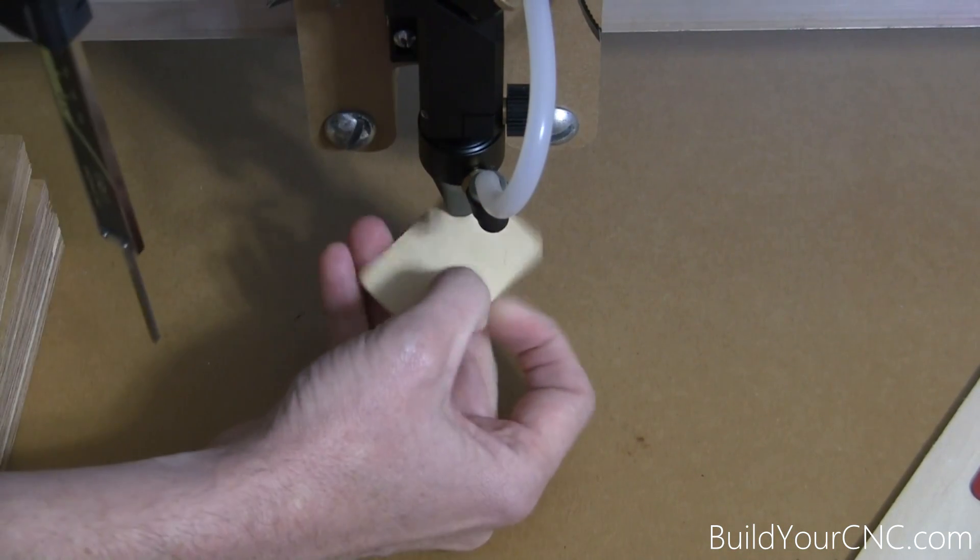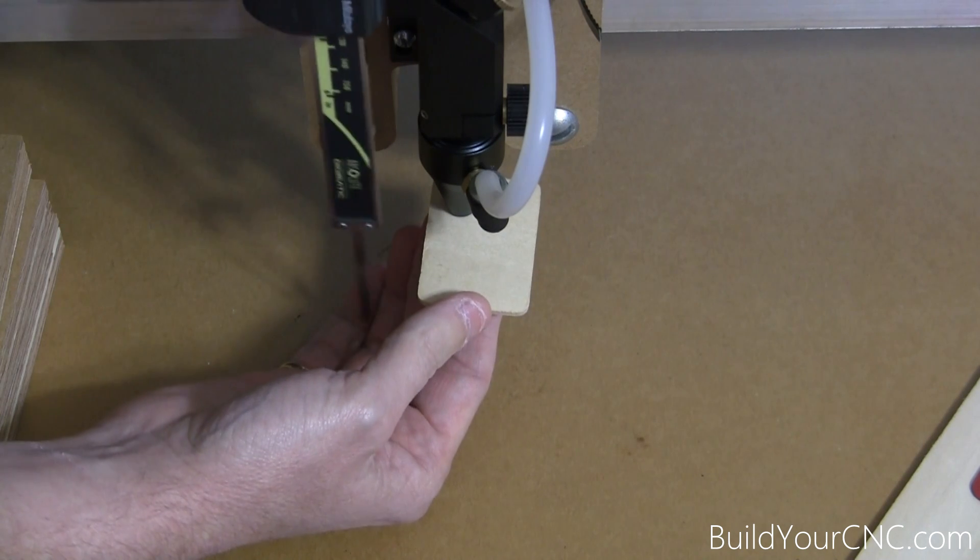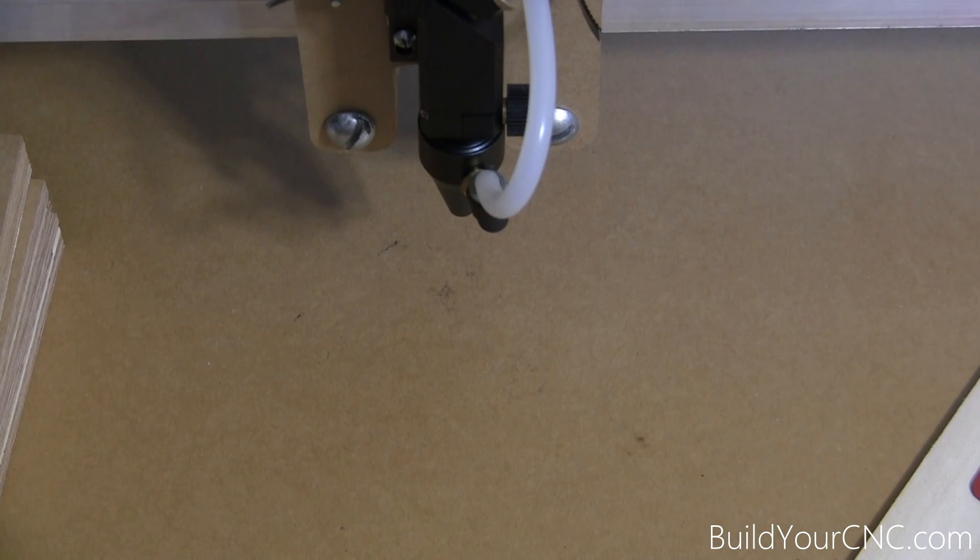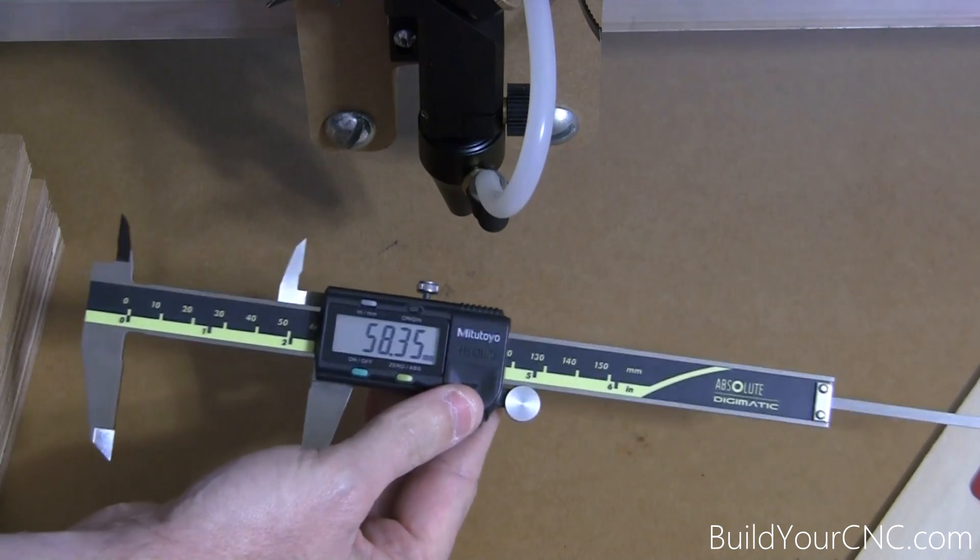Now I'm going to take something like this so I can get my measurements a little bit farther out. I'm trying to keep this as level as possible. We got 58.35. So 58.35 minus 38.88. Now we have that measurement.